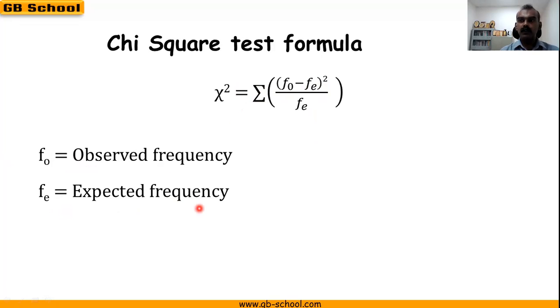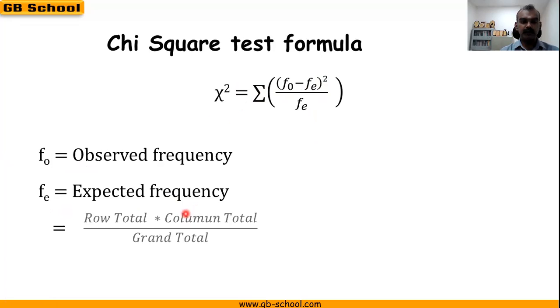There is a formula to calculate expected frequency, that is row total multiplied by column total, divided by grand total. This is the formula for chi-square test.